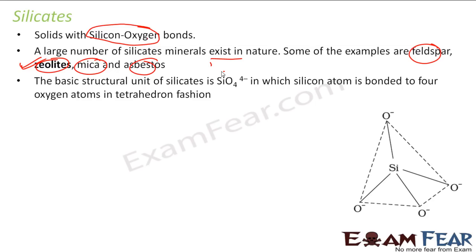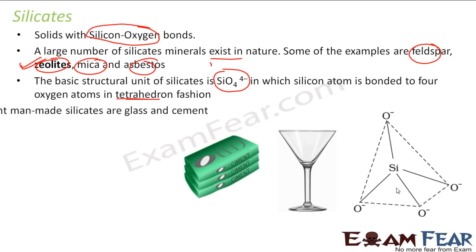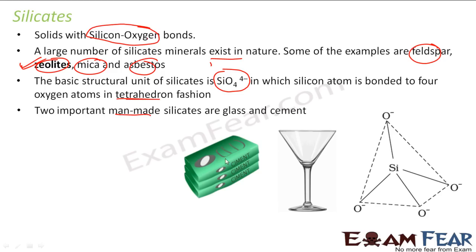The basic structural unit of silicates is SiO4(4-). All four oxygen atoms carry a negative charge, giving the whole unit a minus-4 charge, and the shape is tetrahedral. The most important man-made silicates are glass and cement.